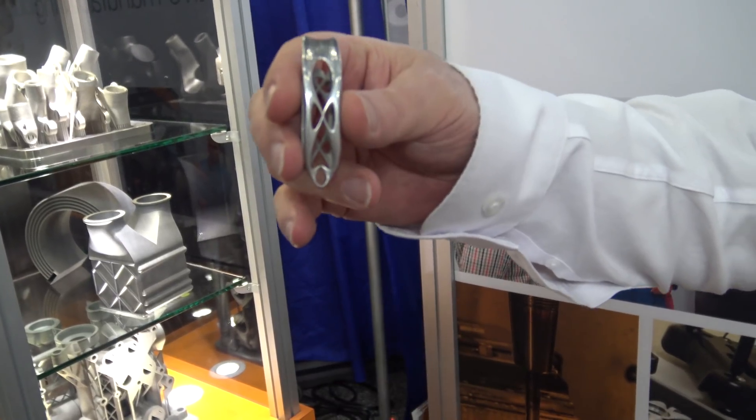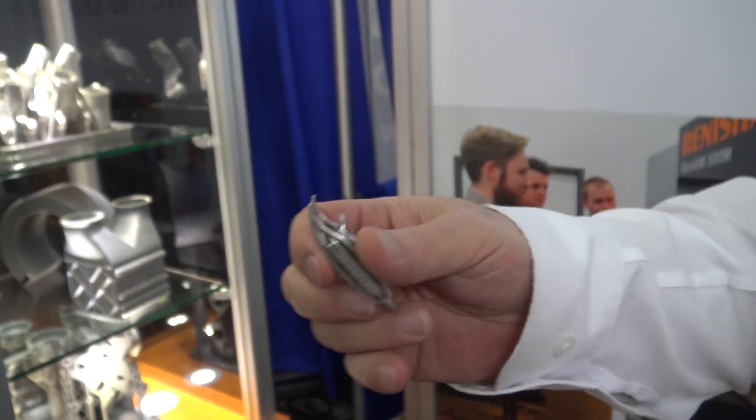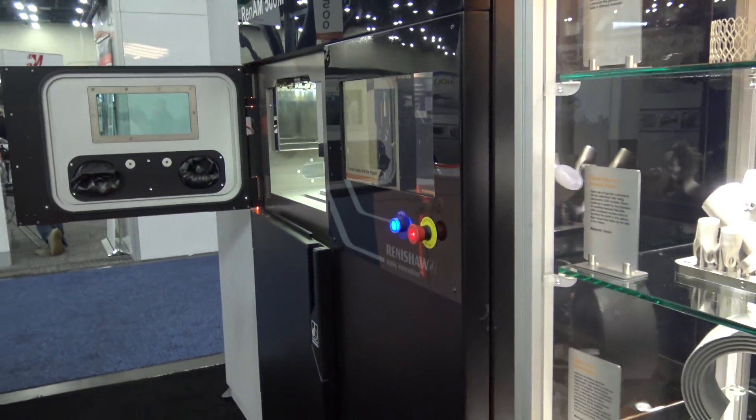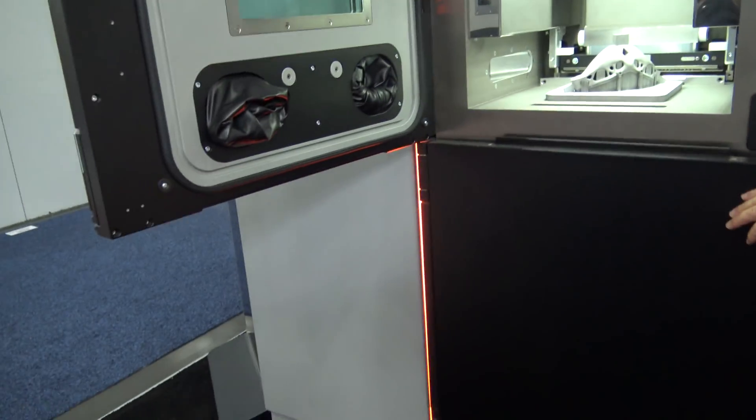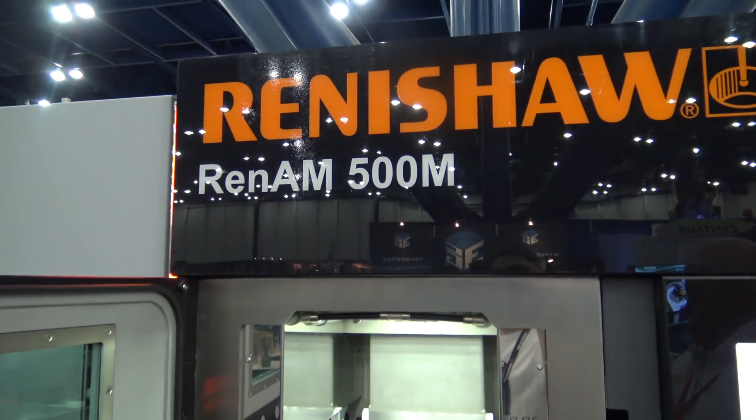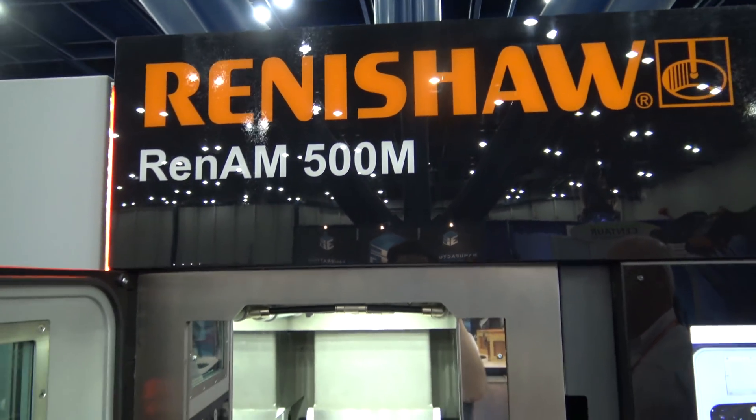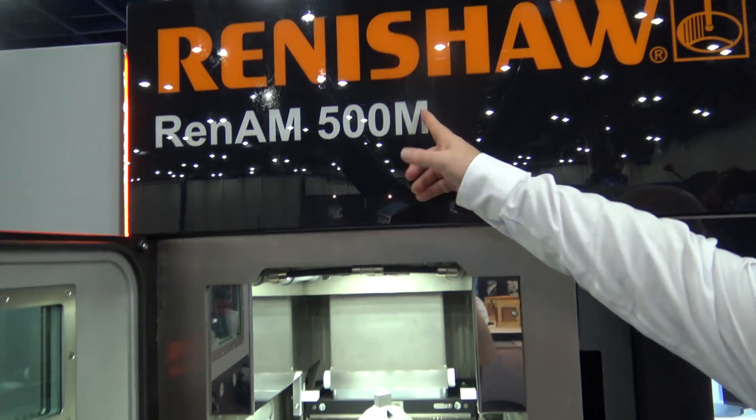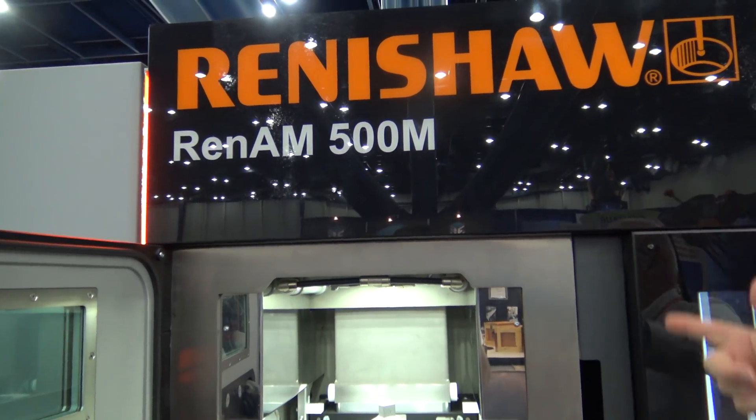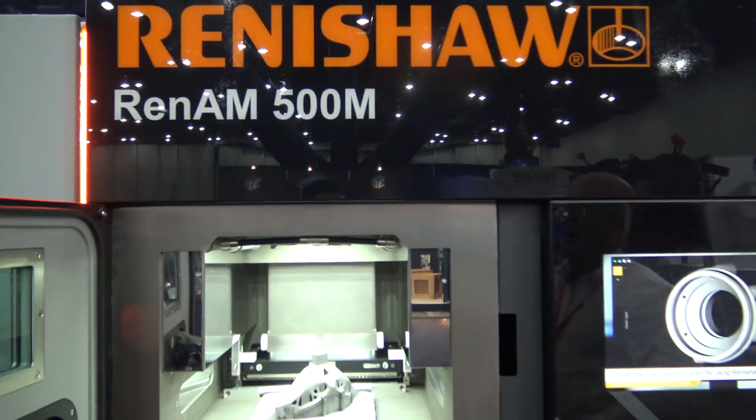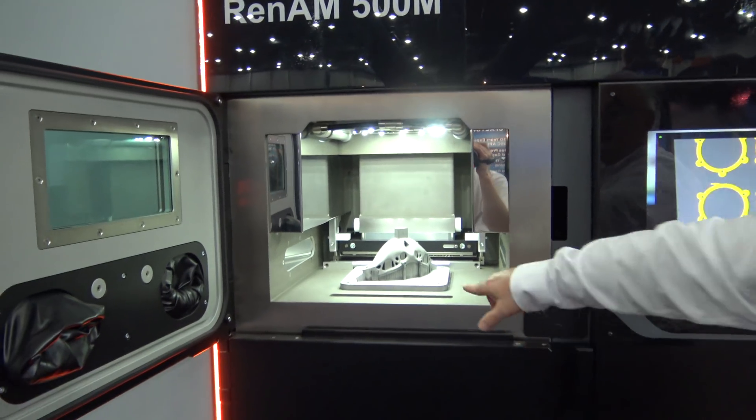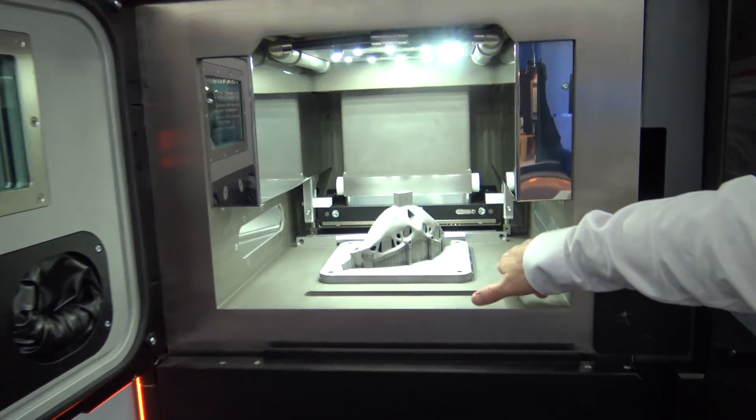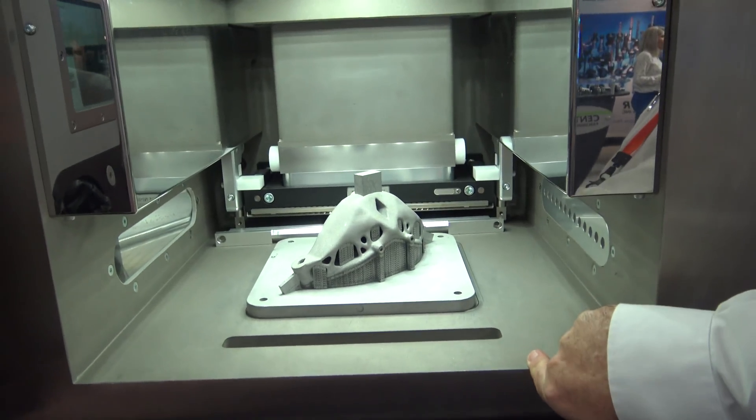Cobalt chrome, thank you. This is a 500. 500 actually refers to the laser beam, so it's a 500-watt laser. The new model we've got is the Q, which is quad, so it has four 500-watt lasers in it. The build volume is 250 by 250 by 380, which is effectively 10 by 10 by 14 inches.